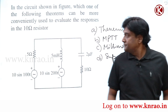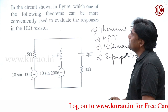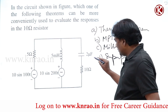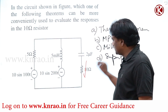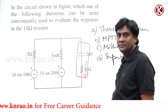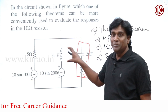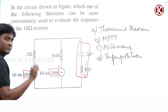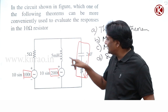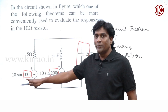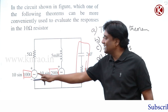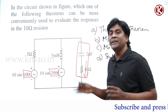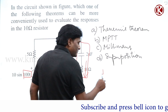Now a new question: in the circuit shown, which theorem can be most conveniently used to evaluate the response in the 10 ohm resistor? You see two voltage sources in series with impedances, so you may think of Milliman's theorem. But observe: we have 100t and 200t — different frequency components. If I consider ω=100, then for 5 mH inductor: jωL = j×5mH×100. The reactance varies with frequency, so only superposition will work.